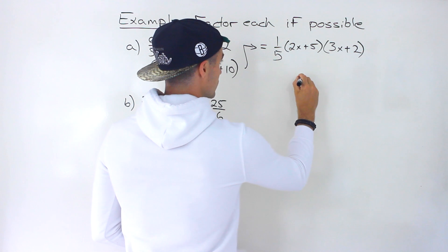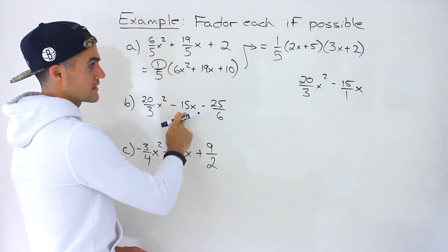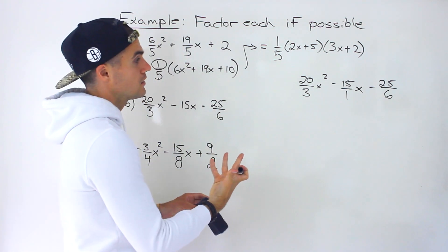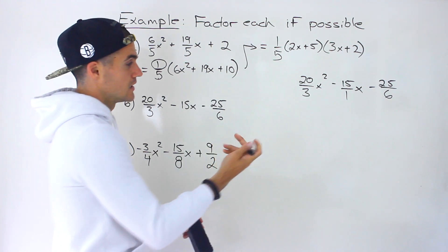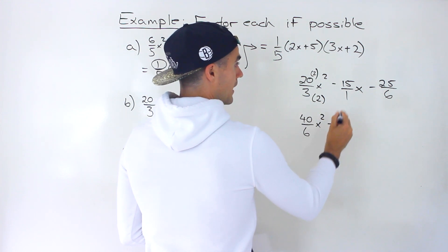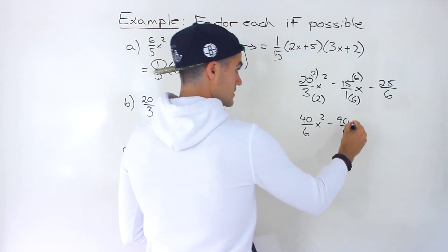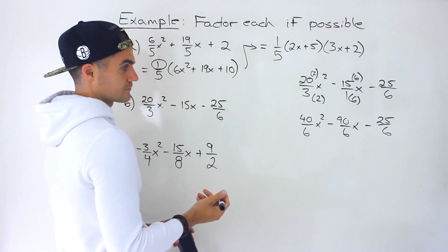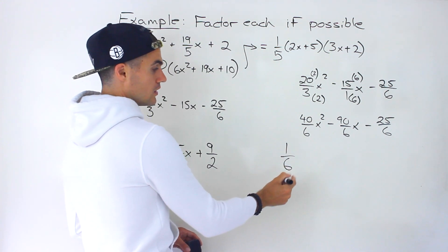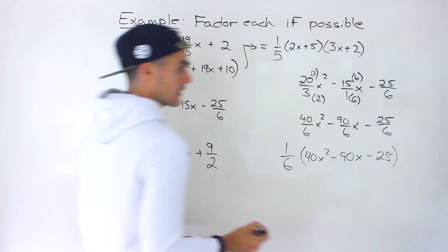The next one: 20 over 3x² minus 15x minus 25 over 6. The 15x is over 1 because it's by itself. First step — change it all to the same denominator. Between 3, 1, and 6, the lowest common denominator is 6. So we multiply the 3 by 2, meaning we multiply the top by 2 as well, giving us 40 over 6x². The 15 is multiplied by 6 on top, giving us 90 over 6x. Then minus 25 over 6. So now we have the same denominator and we're left with 40x² minus 90x minus 25.